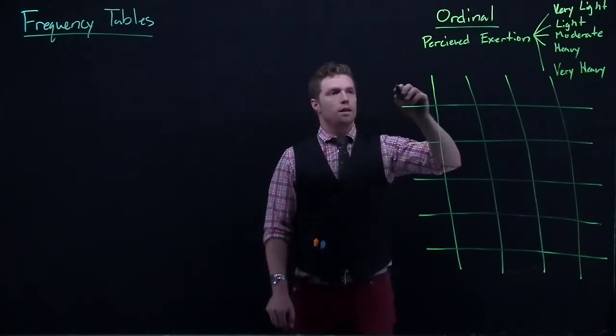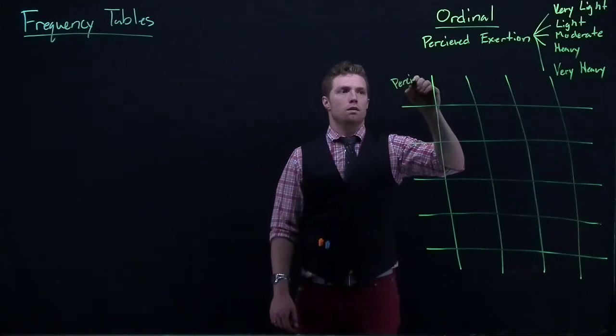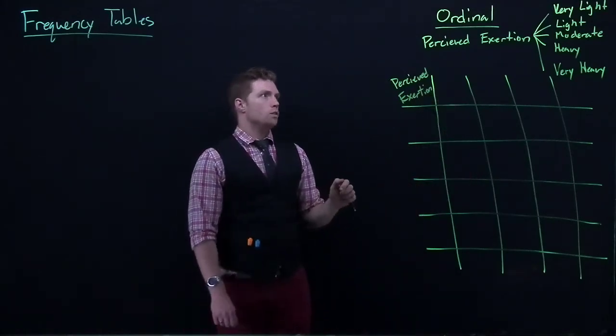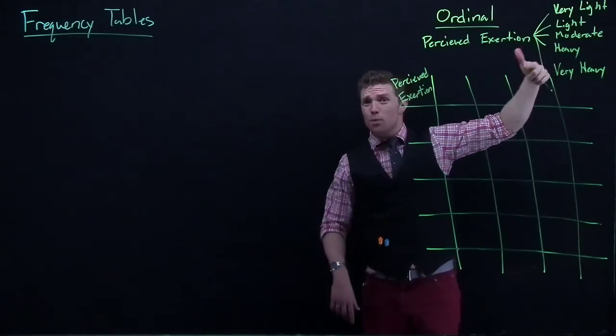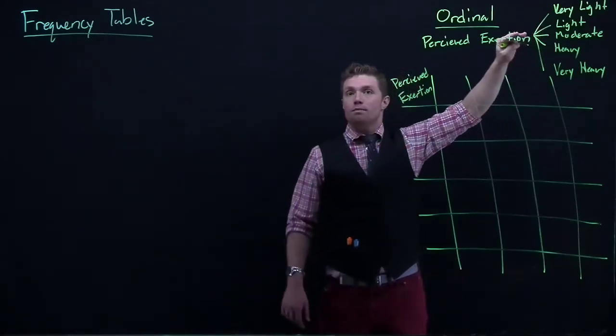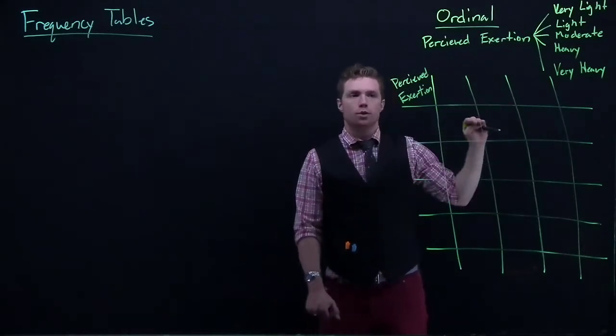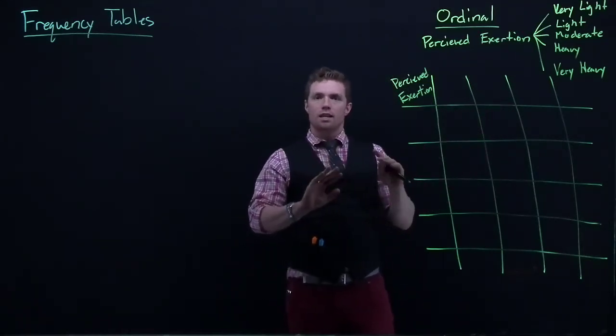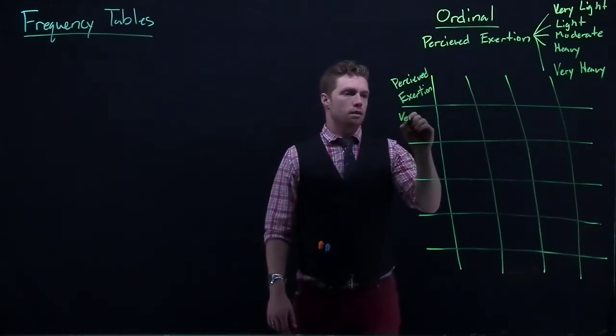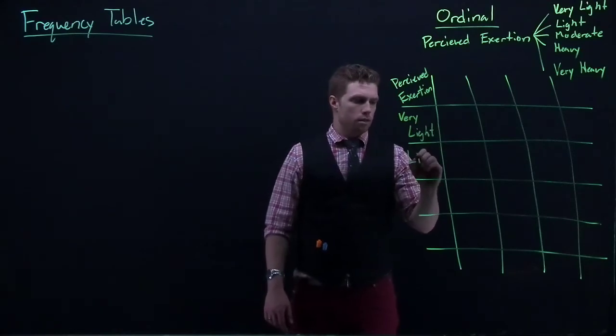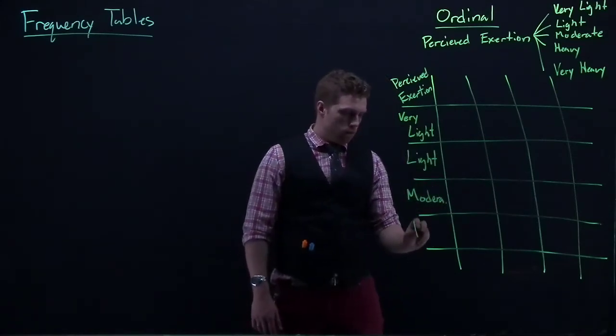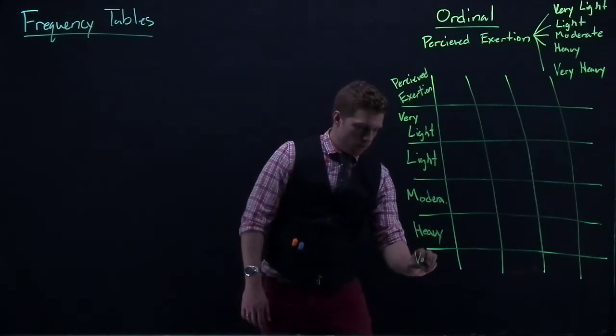Okay, so we'll put that this, for the label up here, this would be perceived exertion. And then we would want to, let's say that we want to do this from lightest to heaviest. We could flip it, we could do it from heaviest to lightest. But if you notice, this is ordinal data, it has an order that it needs to be in. So I'll do very light, light, moderate, heavy, and very heavy.